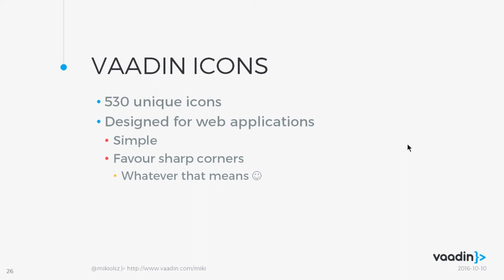Vaadin Icons is used through the iron-icon Polymer element. Having icons in crucial places — like buttons or important actions — gives users a clear clue about the outcome, whether it's an exclamation mark indicating something potentially unsafe, or a check mark confirming an action. It's a surprisingly big boost in the UX.